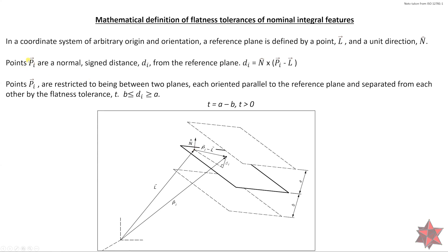Points P are a normal signed distance. So this is the point P, and this is the distance from the reference plane. And we have here the formula: so d equals N, the normal, times parentheses P minus l, and we close the parentheses.